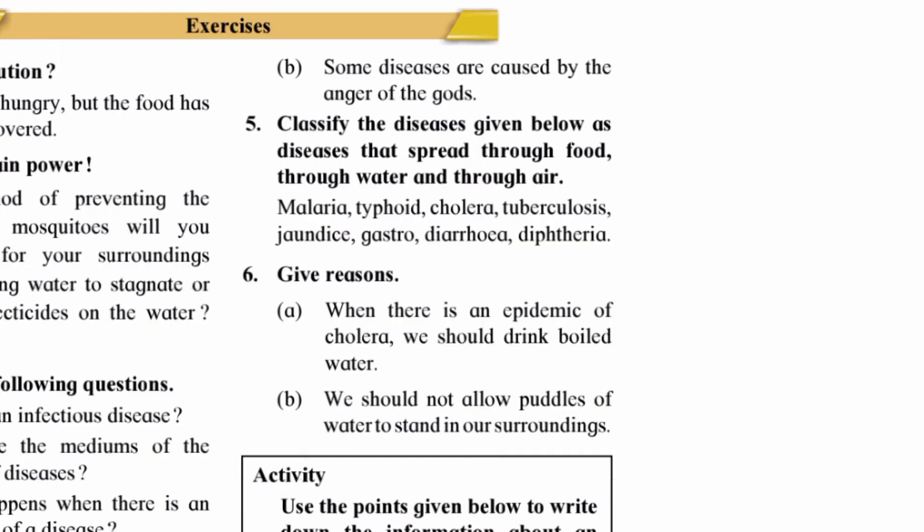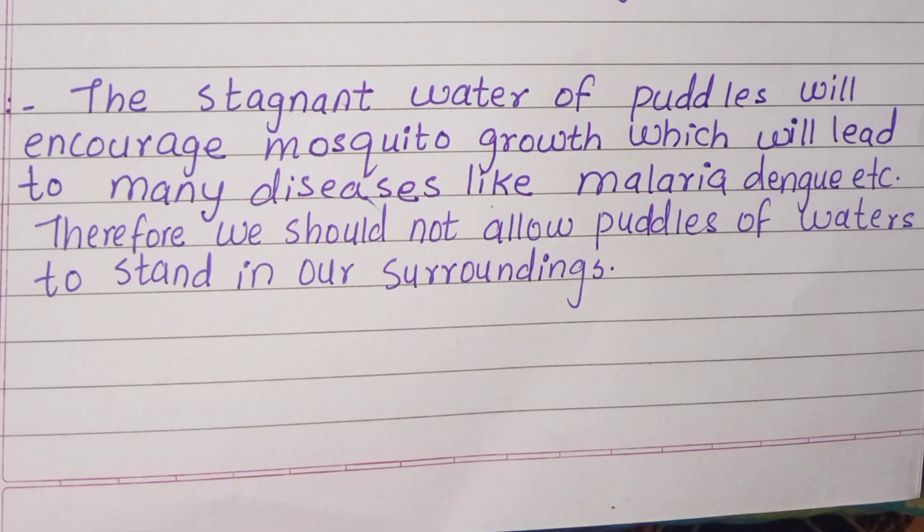Question six B: We should not allow puddles of water to stand in our surroundings. Answer: The stagnant water of puddles encourages mosquito growth, which leads to many diseases like malaria and dengue. Therefore, we should not allow puddles of water to stand in our surroundings.